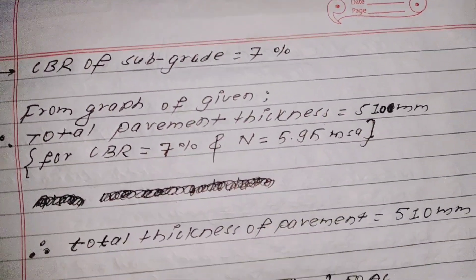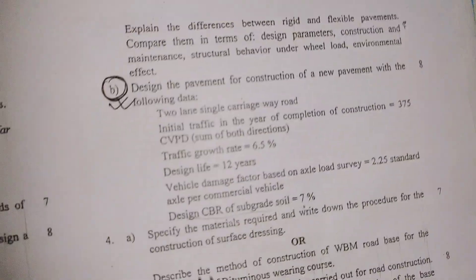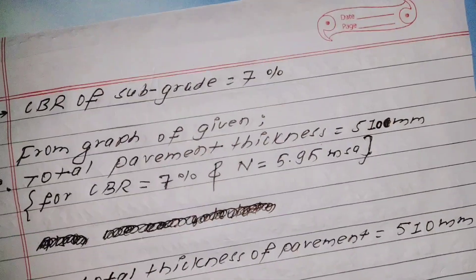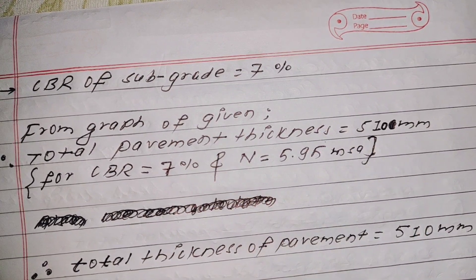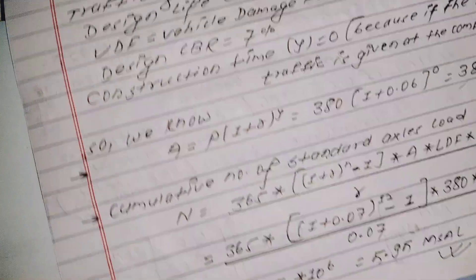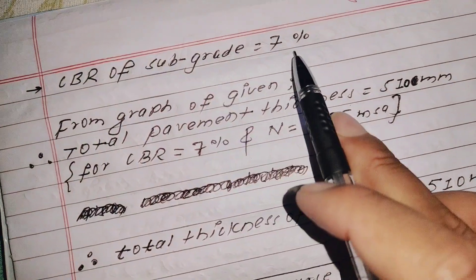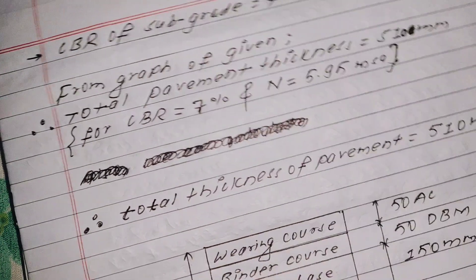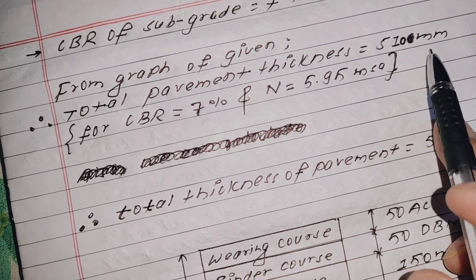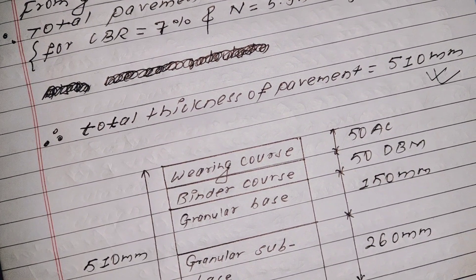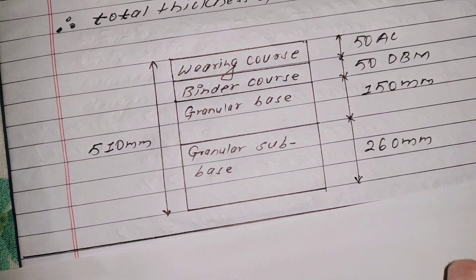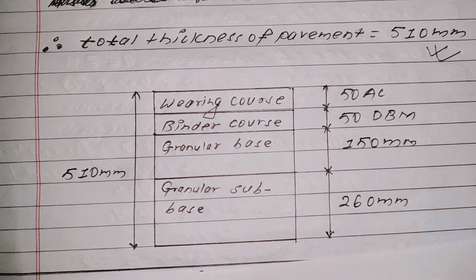Now we determine the CBR of the subgrade soil. The design CBR of subgrade soil is 7%. So from the design chart of IRC 37-2001 for CBR = 7% and design traffic = 5.95 MSA, the total pavement thickness is 510 mm.